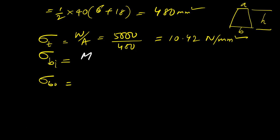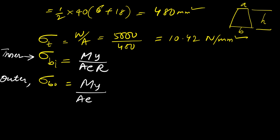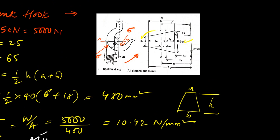The equation for bending stress will be M·y / (A·e·r). For inner surface and outer surface, the same formula applies: M·y / (A·e·r). Here, M is the bending moment about the neutral axis. y is the distance from the neutral axis to the point of interest. A is the cross-sectional area of the trapezium. e is the distance from the centroidal axis to the neutral axis.